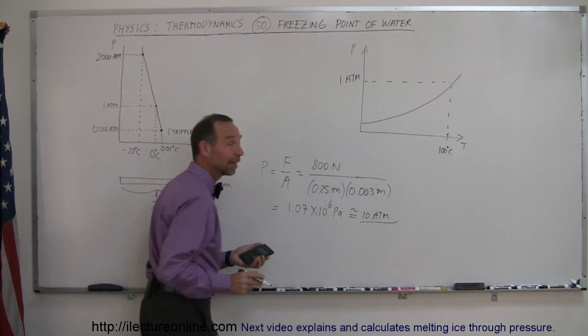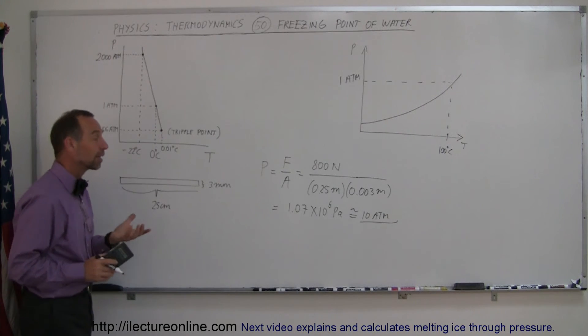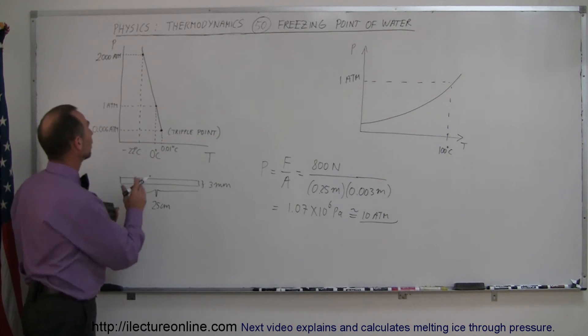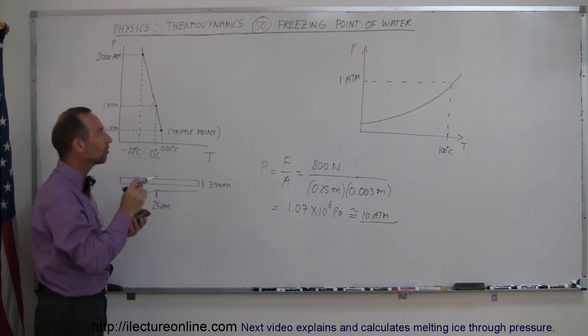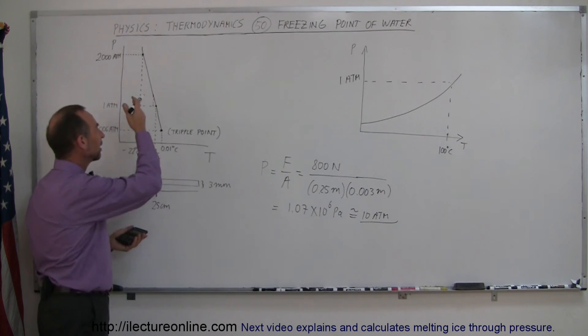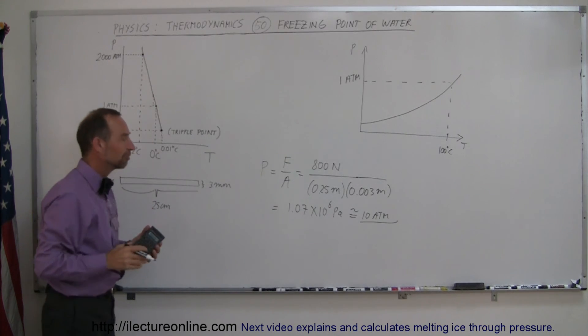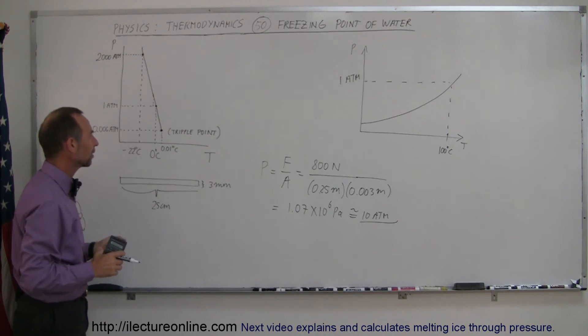So you can see that the bottom of an ice skate blade pushes down on the ice with a tremendous amount of pressure, and therefore with these higher pressures, water will actually freeze at a lower temperature. And it actually will cause the ice to melt, just a thin film of it between the ice skate blade and the ice. So you can see that's a direct effect of the result of adding additional pressure on the ice.